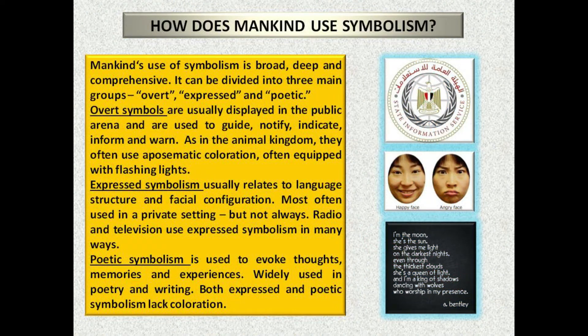How does mankind use symbolism? Mankind's use of symbolism is broad, deep and comprehensive. It can be divided into three main groups: overt, expressed and poetic. Overt symbols are usually displayed in the public arena and are used to guide, notify, indicate, inform and warn. As in the animal kingdom, they often use aposematic coloration, often equipped with flashing lights. Expressed symbolism usually relates to language structure and facial configuration, most often used in a private setting, but not always — radio and television use expressed symbolism in many ways. Poetic symbolism is used to evoke thoughts, memories and experiences. Widely used in poetry and writing, both expressed and poetic symbolism lack coloration.